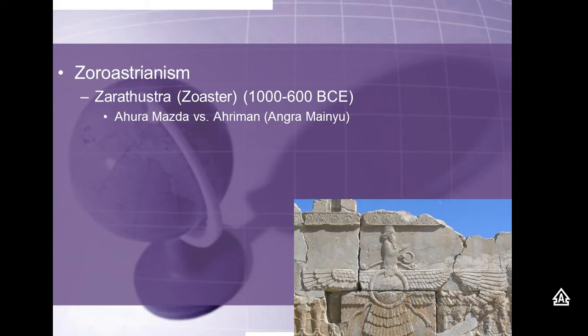Ahura Mazda is the God that judges. If you do not follow Ahura Mazda — if you lie, cheat, steal, treat people unfairly — you follow an evil spirit called Ariman or Angra Manu. Think of Ariman as an angry, evil man — kind of like a devil figure. There are two opposing spiritual forces: Ahura Mazda is a God of good, and Ariman is an evil spirit who leads people astray and tempts them. If you're a follower of Ariman, an evildoer, Ahura Mazda will judge you and cast you into hell, where you will be punished for your sins.